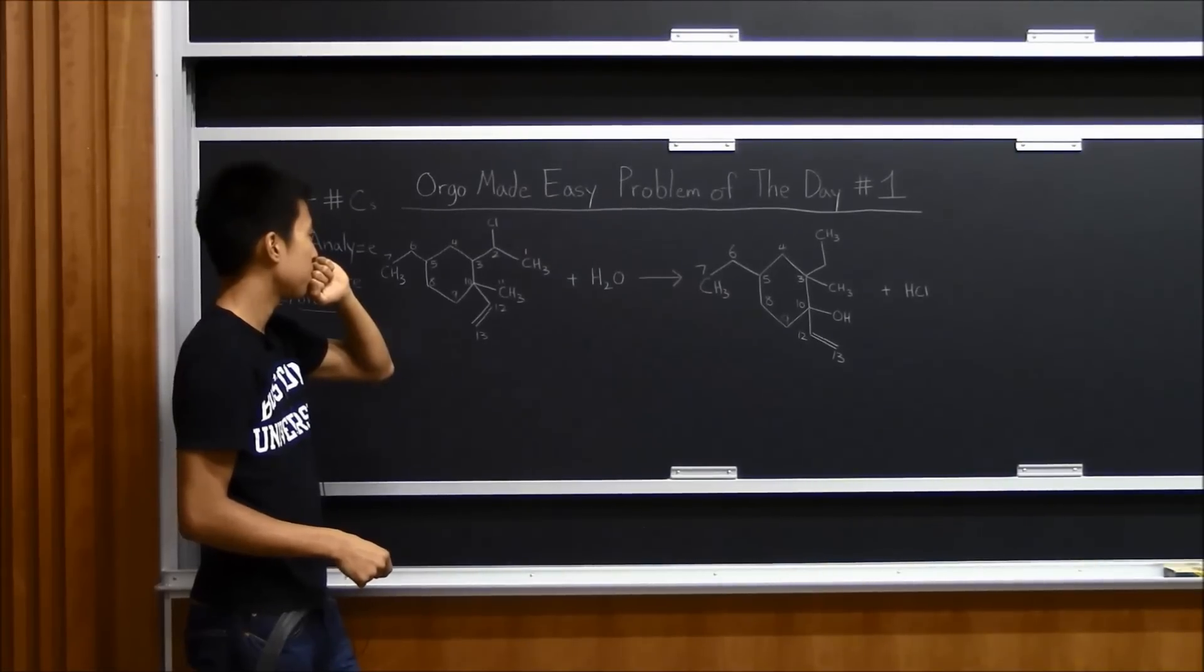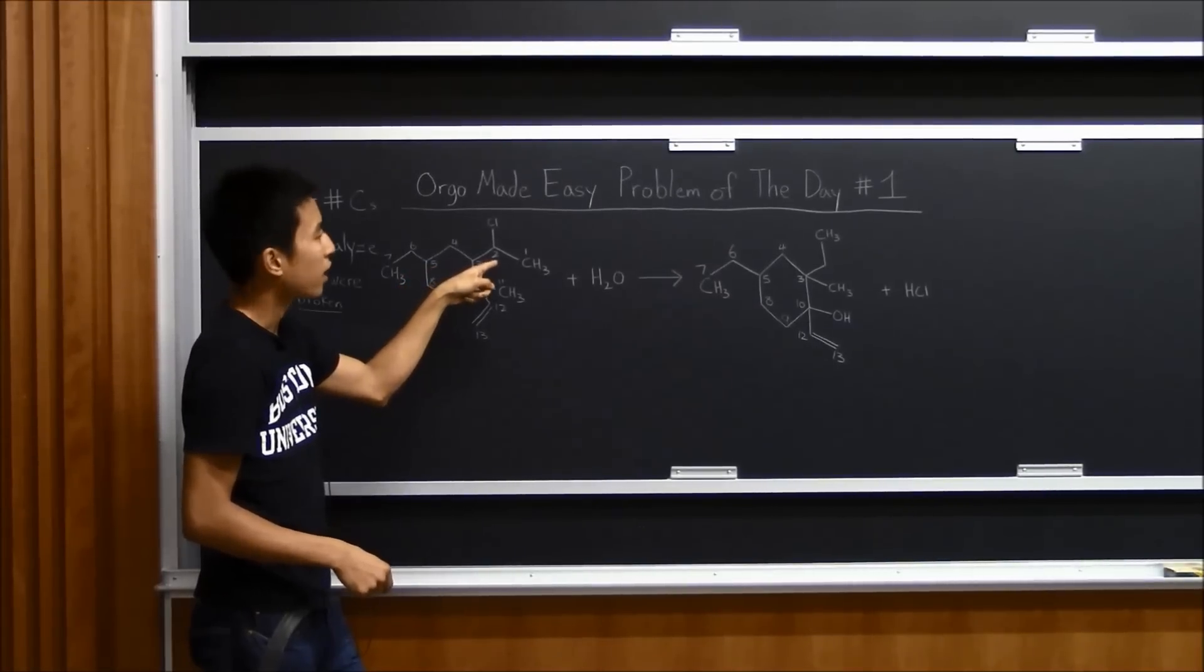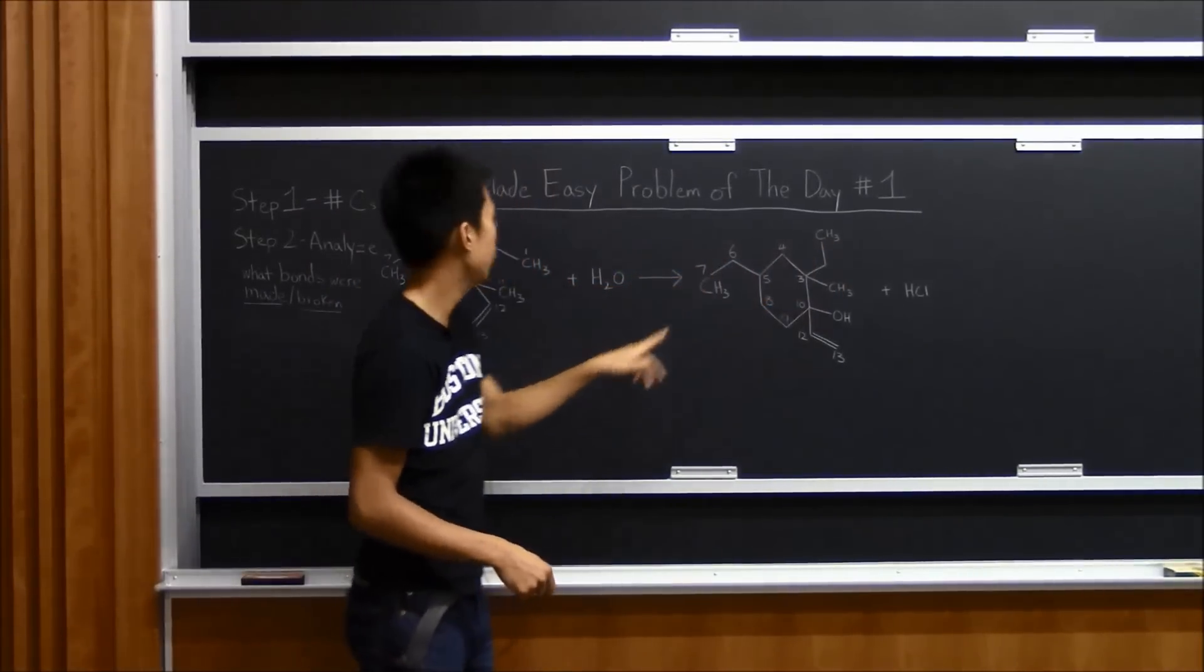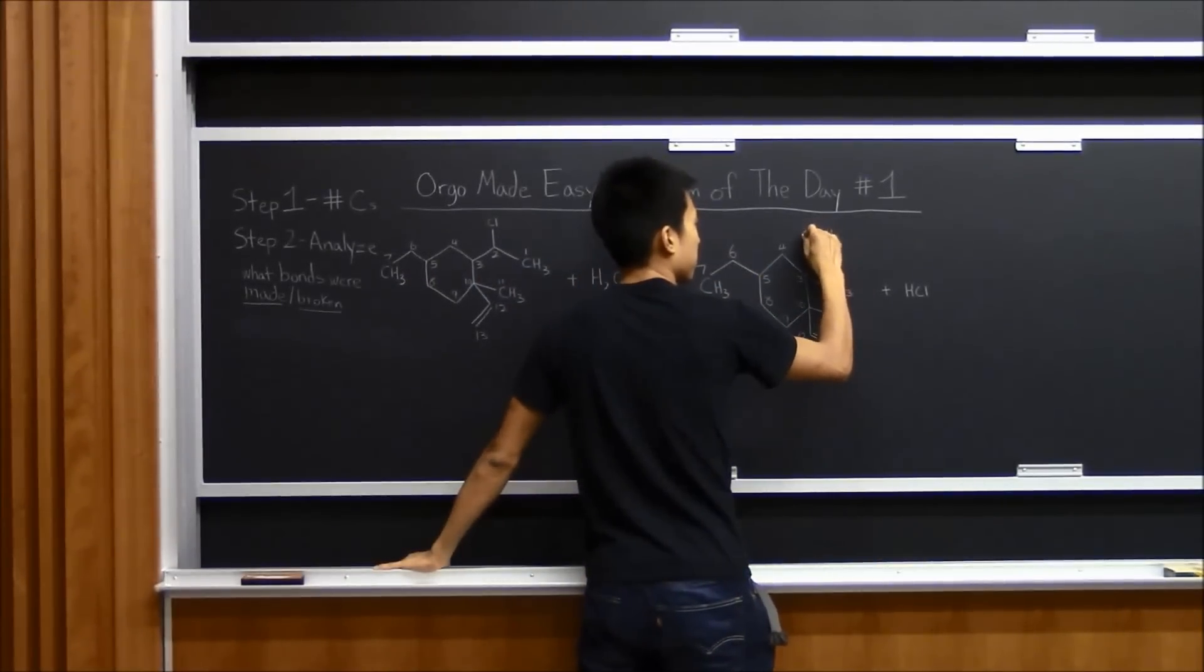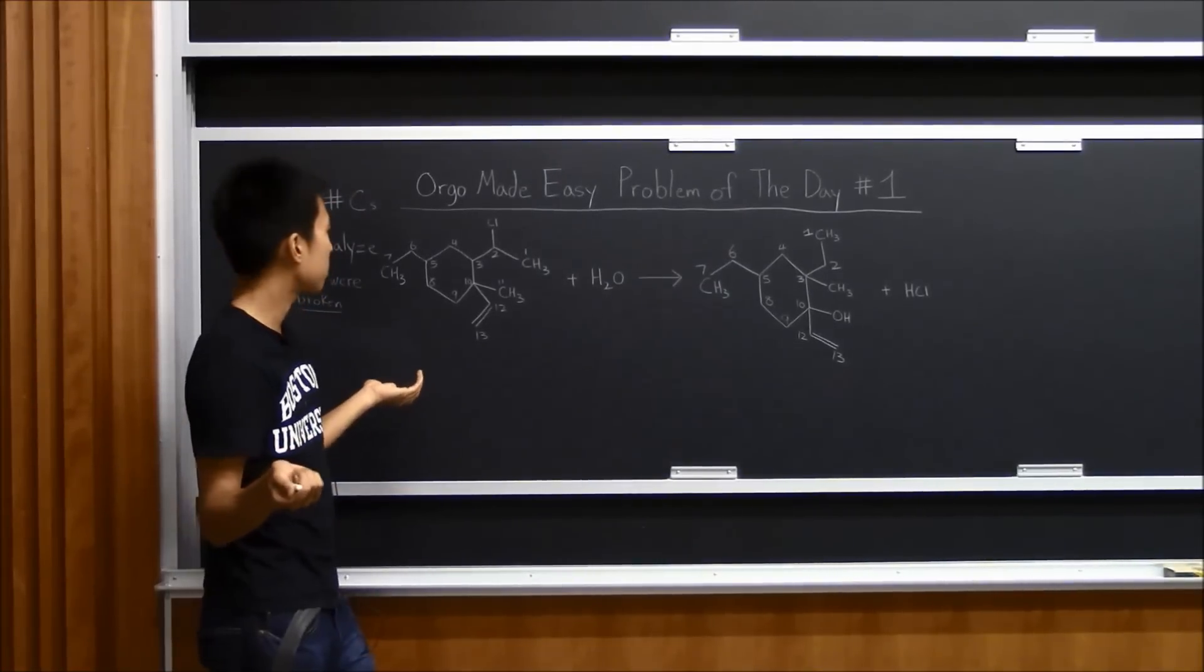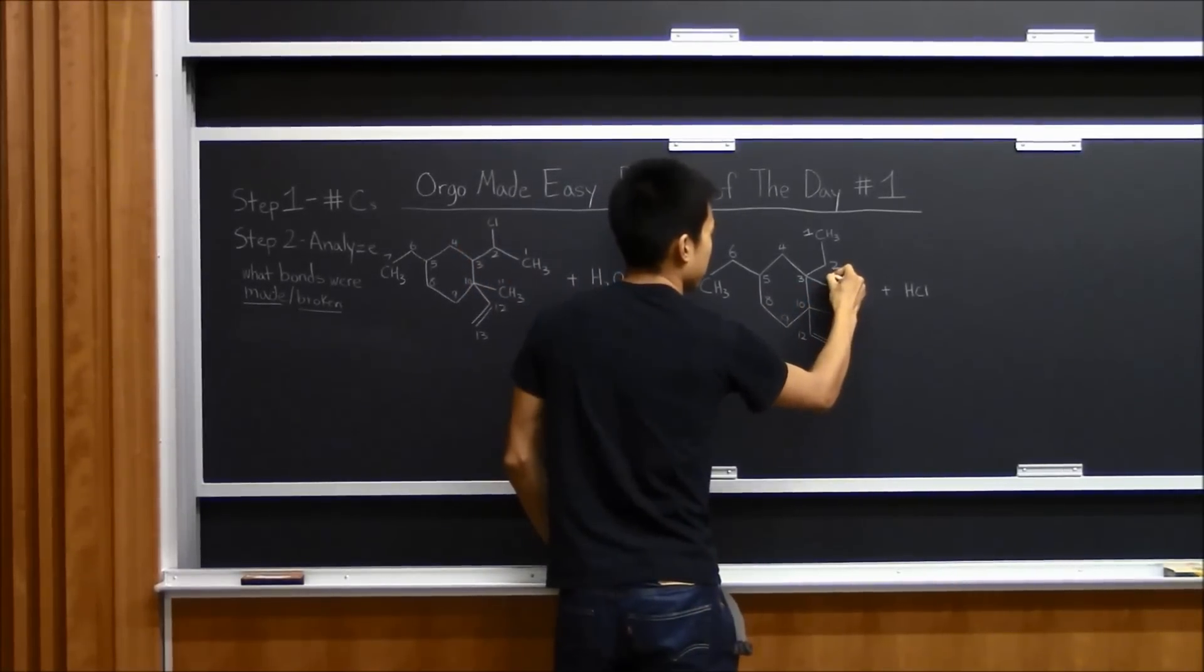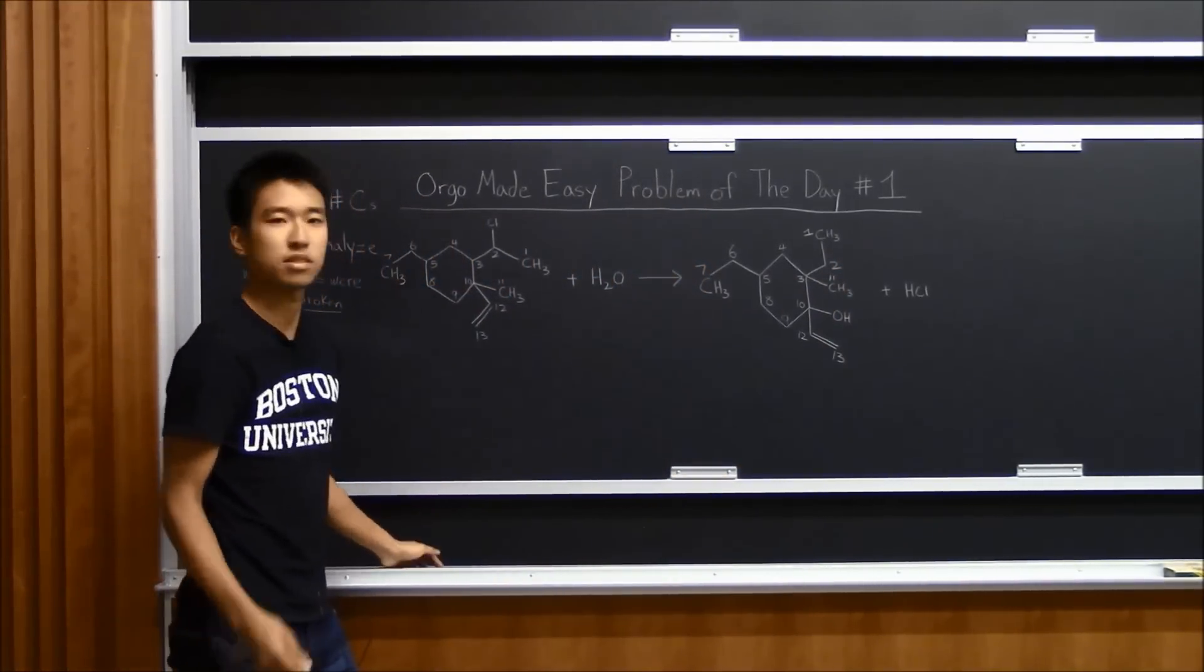But now there's an OH there attached to ten, which is kind of weird. And eleven is gone. Eleven is no longer on carbon ten. Alright. Hmm. Well, carbon three is attached to two before, and it looks like two was attached to a methyl group before. And there is something that matches that description here. So this is probably carbon two and carbon one. And all that leaves is carbon number eleven, which is here, and it looks like it migrated up here. So carbon eleven.